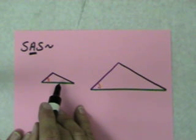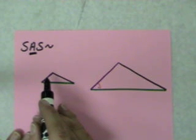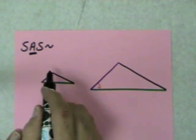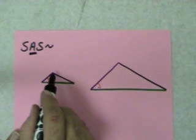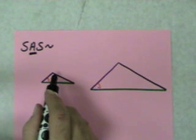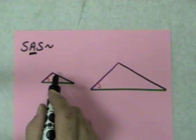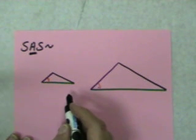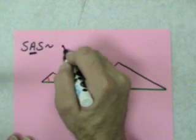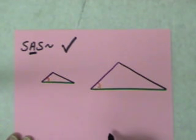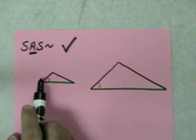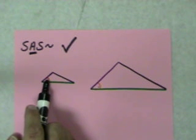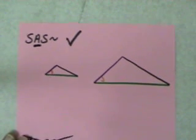We found that no matter how large or small we made the triangles on the technology, we could not make them not similar. They were always similar. So we decided that side-angle-side similarity worked and was another shortcut, with the angle between the two sides.